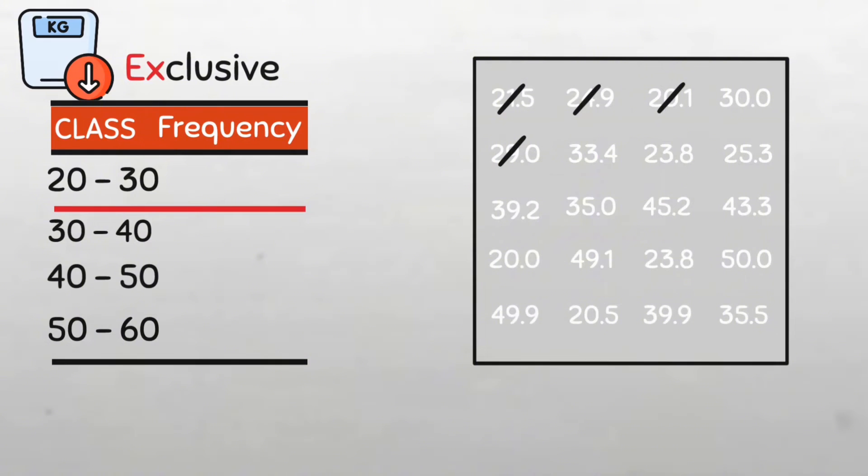Well, remember the exclusive type of classification excludes the upper limit. So the 20 to 30 class excludes 30 kg, i.e. it's going to take all values between 20 and under 30. And the 30 to 40 class will therefore take all values 30 kg and above but under 40 kg and so on. So the value of 30 kg will be in the 30 to 40 class. Now let's continue grouping. So 29.0, 23.8, 25.3, 20.0, 23.8 and 20.5. That's 9. So we have 9 values in the first class.